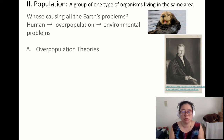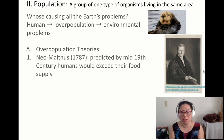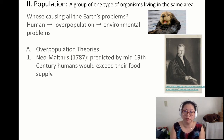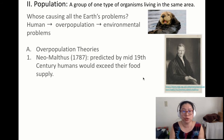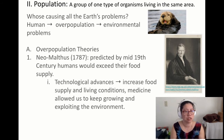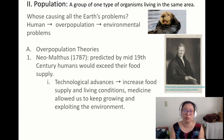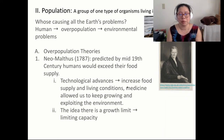Overpopulation has been talked about since 1787 with Malthus — this is a picture of Malthus on the right-hand side. The Neo-Malthusians are people who believe in him. He predicted that by the 19th century humans would exceed their food supply, so we also have our own population limits — food and space. However, Malthus did not consider technological advances that help increase our food supply, living conditions, and medicine, which has allowed us to keep growing and exploiting the environment. This idea of a growth limit is called, in population ecology, carrying capacity. Things that are usually limiting are food and resources.